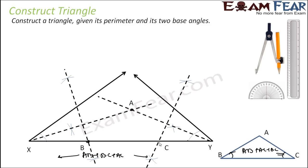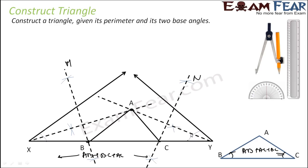Now, ABC is the required triangle. Why? Because BX equals BA — since BM is the perpendicular bisector of AX. Similarly, CA equals CY — because CN is the perpendicular bisector of AY. So the perimeter condition is satisfied.